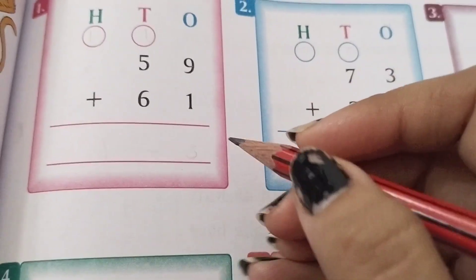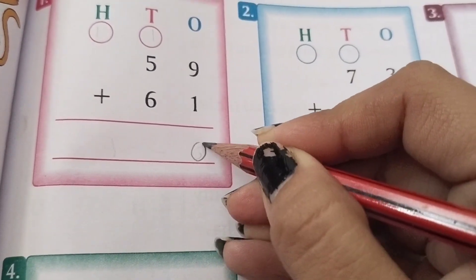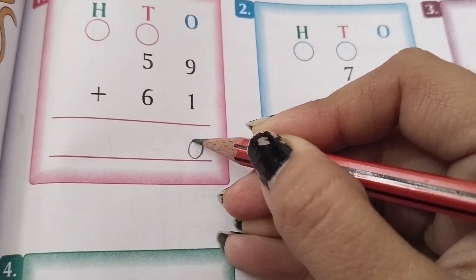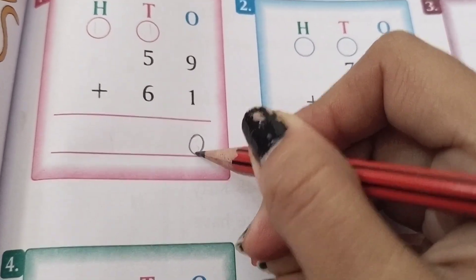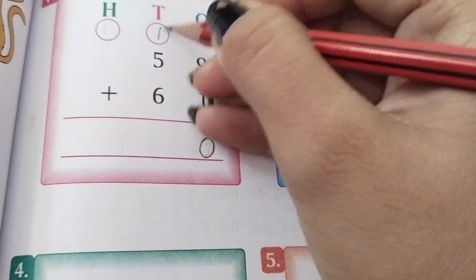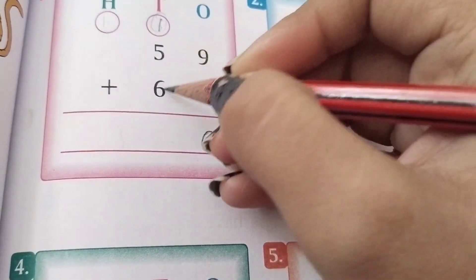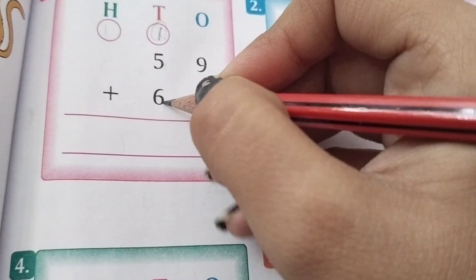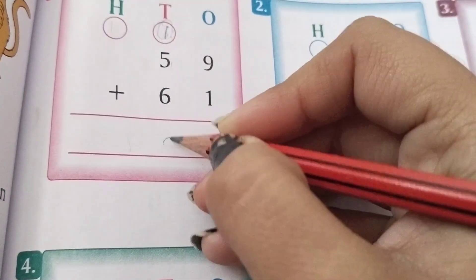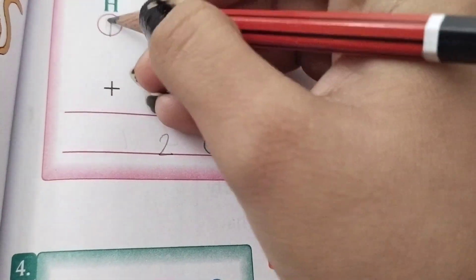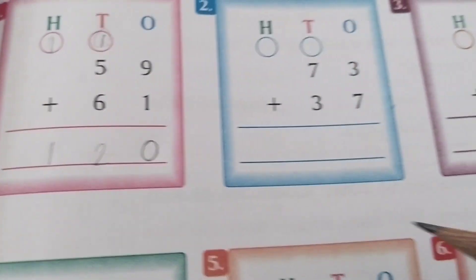It will be 10. So the ones digit we will write here, and the tens digit we write on top: 1. Now we will add 5 plus 6 plus 1. That's 11 plus 1 equals 12. We write 2, and 1 carries here. We will write 1 like this.